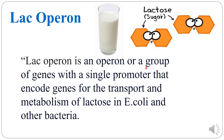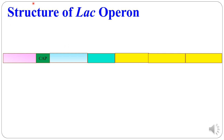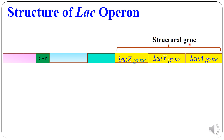The lac operon is an operon or a group of genes with a single promoter that encodes genes for the transport and metabolism of lactose in E. coli and other bacteria. The lac operon consists of three structural genes: the lacZ gene, the lacY gene, and the lacA gene.